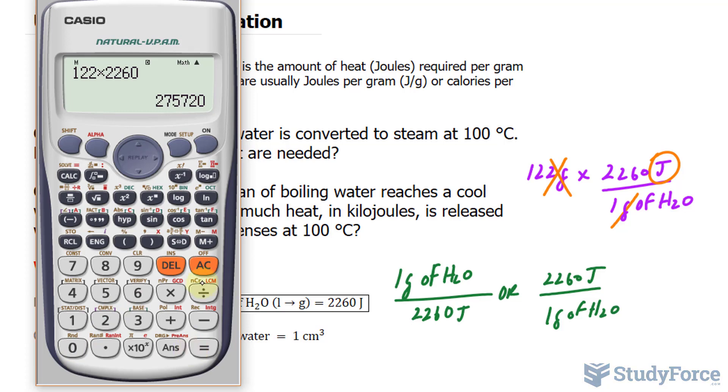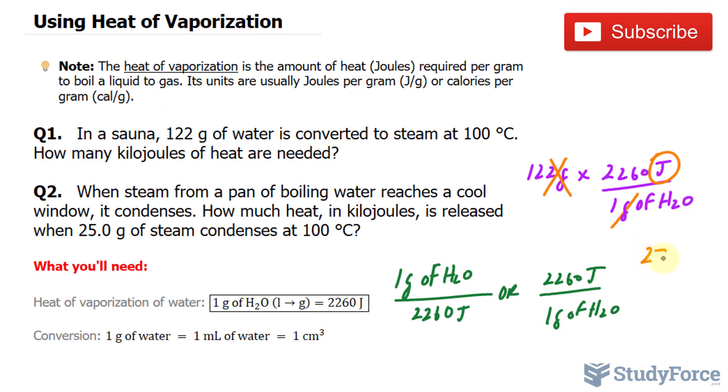Now remember, they want the answer in kilojoules, so I'll divide this by 1,000. That's how you go from joules to kilojoules. And we get, to three significant figures, 276. Notice that the first discarded number, the 7, is greater than 5, so this 5 goes up by 1. We have 276 kilojoules.